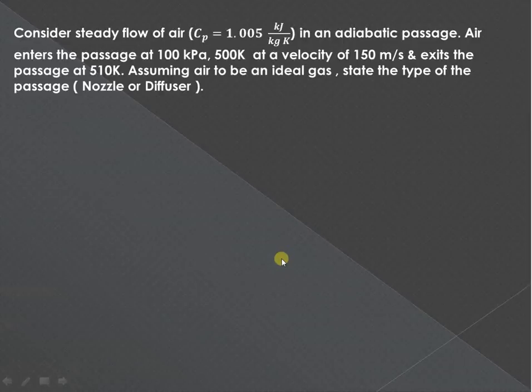It exits the passage at temperature of 510 kelvin. Assuming it to be an ideal gas, we have to state which type of passage it is - whether it is a nozzle or diffuser.